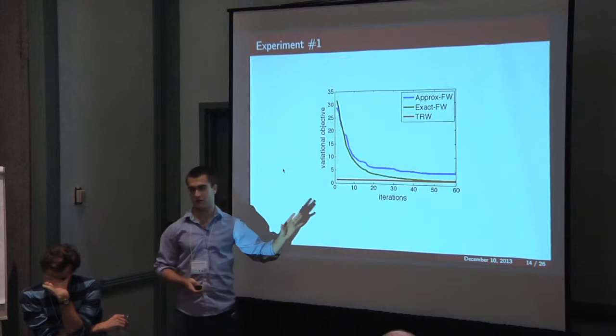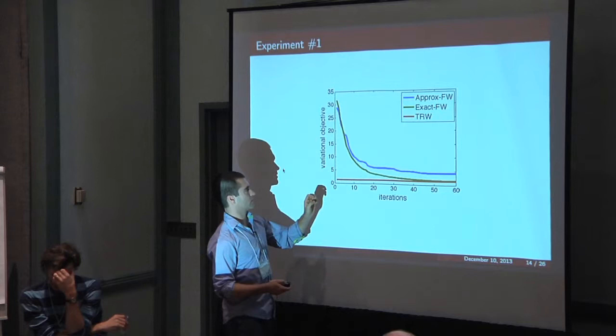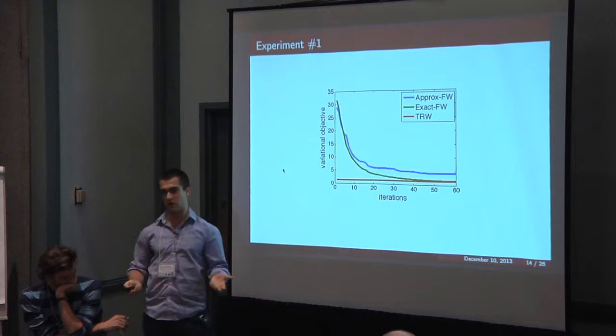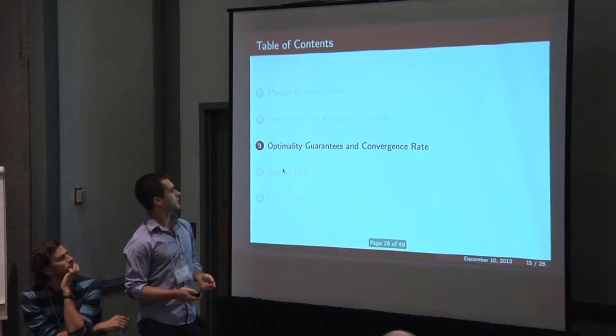Also, the green line is my algorithm. The blue line is basically if I use some approximate solver for MAP inference. And you can see that it actually really hurts you a lot.